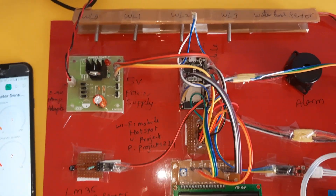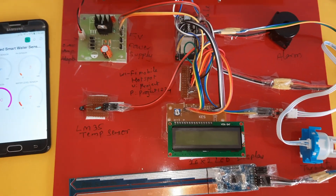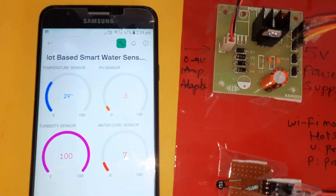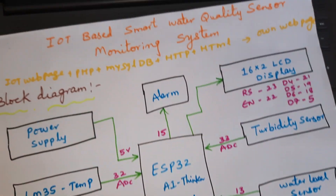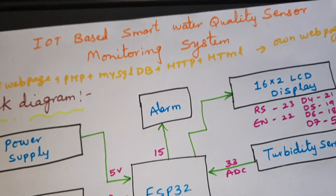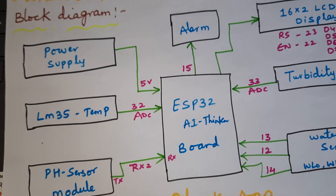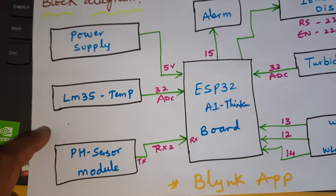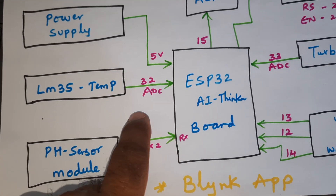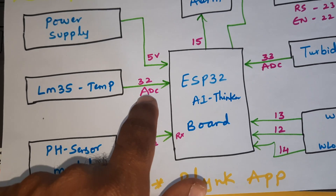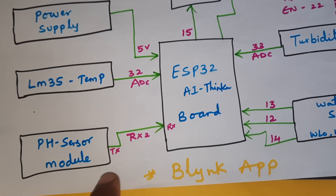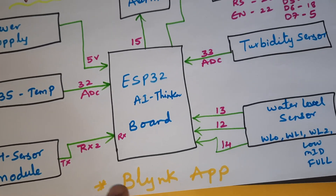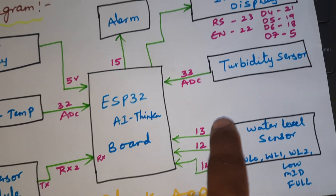Hi, we are from SVS Embedded. The project title is IoT-based Smart Water Quality Monitoring System using ESP32 Thinker board. We are using four sensors: LM35 temperature sensor connected to the ADC 32 pin, and pH sensor connected to Serial Communication Serial 2.